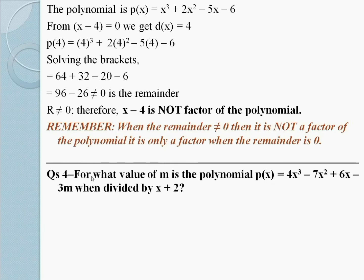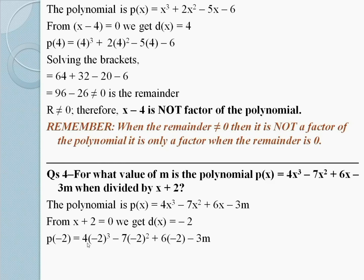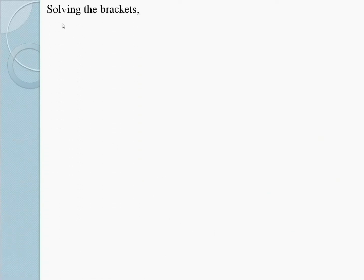Question number 4: For what value of m is x + 2 a factor of P(x) = 4x³ - 7x² + 6x - 3m? The polynomial is P(x) = 4x³ - 7x² + 6x - 3m. From x + 2 = 0, we get x = -2. Replacing: P(-2) = 4(-2)³ - 7(-2)² + 6(-2) - 3m. Solving: -32 - 28 - 12 - 3m = -72 - 3m is the remainder.